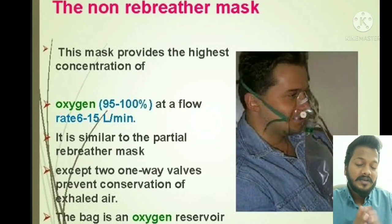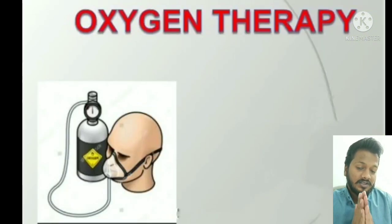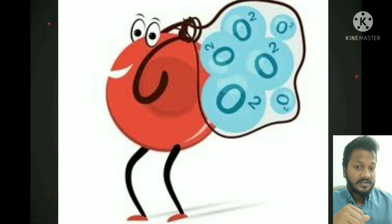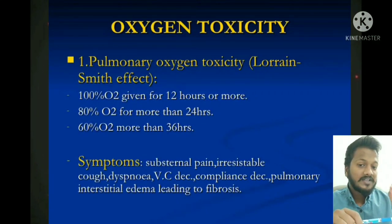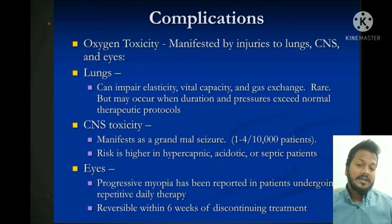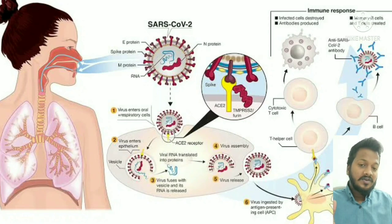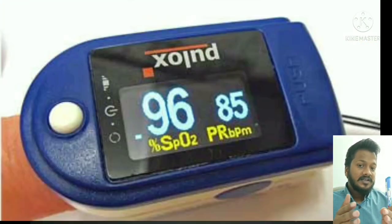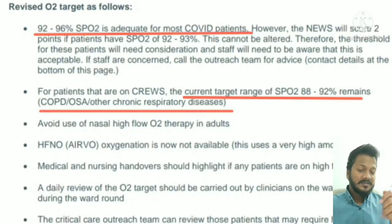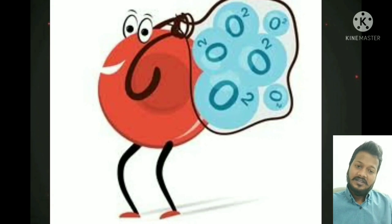When trying to maintain saturation with oxygen therapy, never aim for 100% saturation — it may lead to oxygen toxicity causing irreversible lung damage. For a COVID-infected patient, target saturation between 89–93%; beyond that is unnecessary and risks oxygen toxicity.